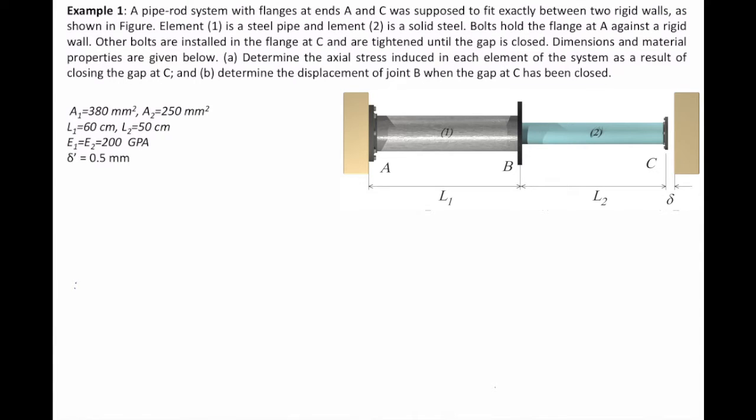A pipe rod system with flanges at ends A and C was supposed to fit exactly between two rigid walls. However, element number 1 and element number 2 are shorter than what they are supposed to be. So there is a gap at point C.